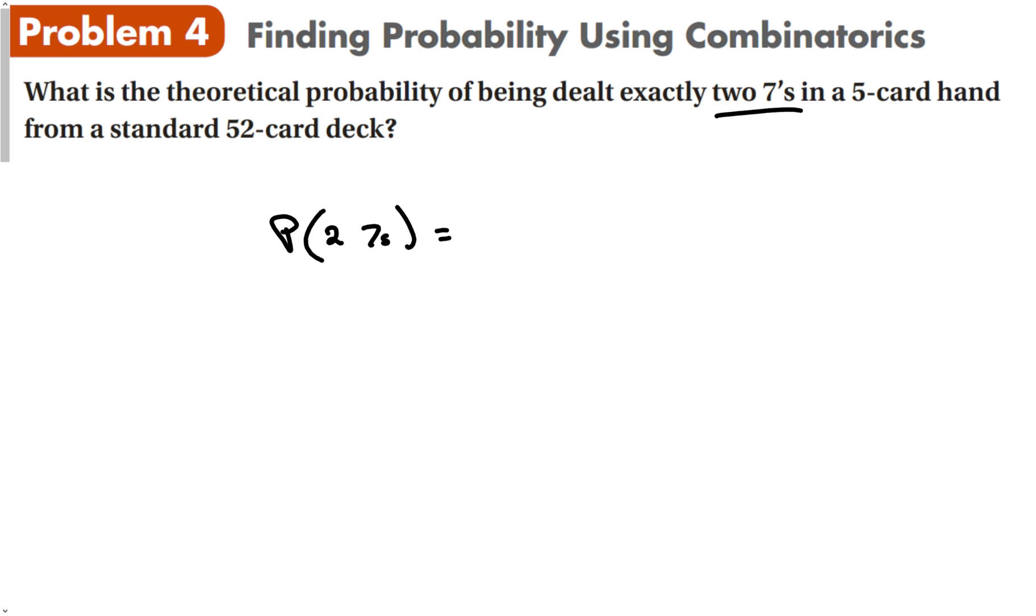The probability of 2 sevens is going to be every combination of every possible way we can get 2 sevens. When I'm playing cards, it doesn't matter when you get the 2 sevens, so the order doesn't matter. I can get 2 sevens first, I can get them second, I can get them spread out, it doesn't matter. So this is a combination. In a standard 52-card deck, there are 4 sevens. So that would be 4 choose 2, and I want 2 of them. Times, it doesn't matter what I have in the rest of my hand, but there are 48 cards left in the deck after these 4 sevens, and I want 3 of those. Over 52 choose 5.